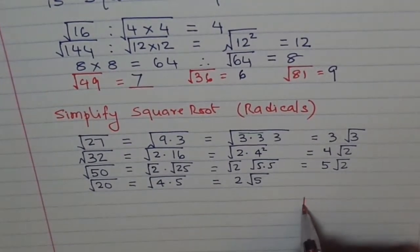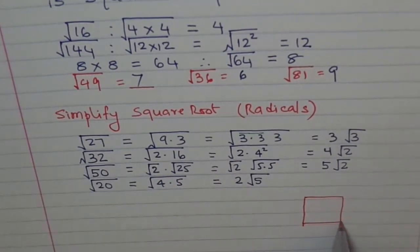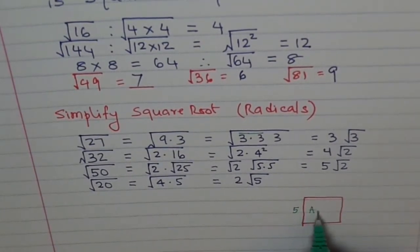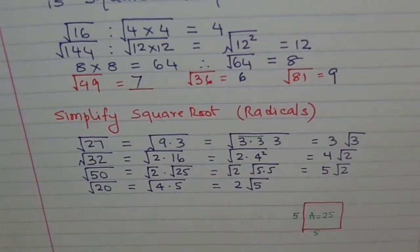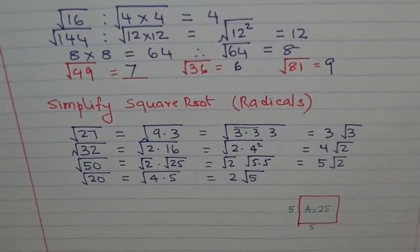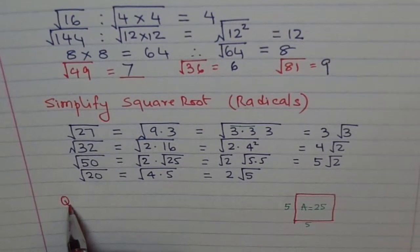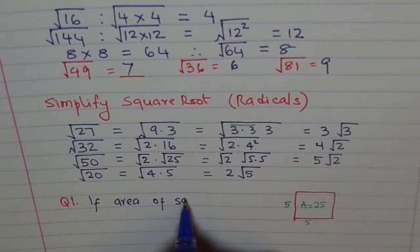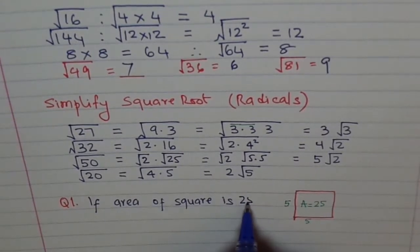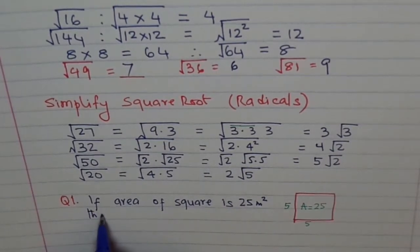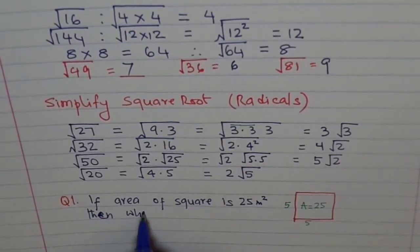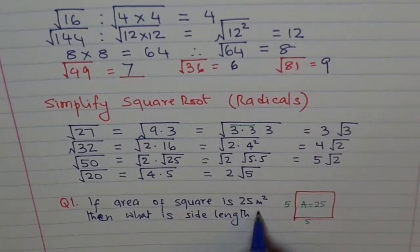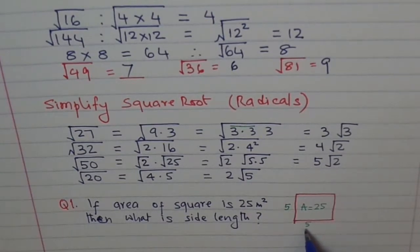Let's take a square with sides of 5. The area is 5 times 5, which is 25. Question 1: if the area of a square is 25 meters squared, what is the side length? The side length is square root of 25, which is 5.